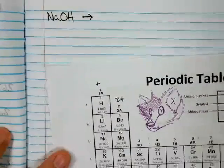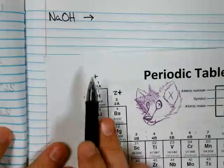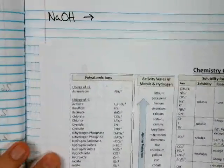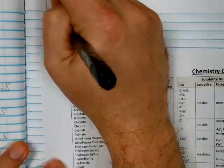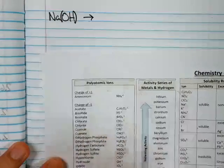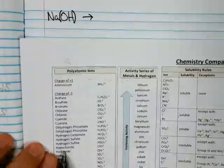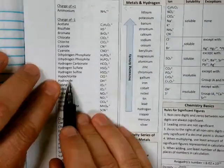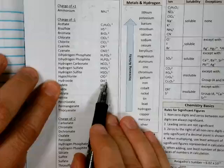So you have sodium. Sodium has a plus one charge. This is hydroxide which is a polyatomic ion. So hydroxide, negative one charge.